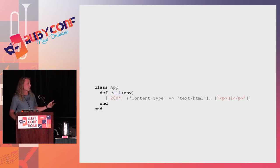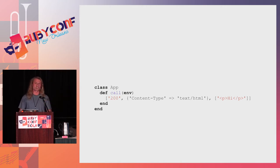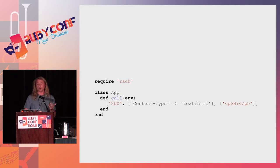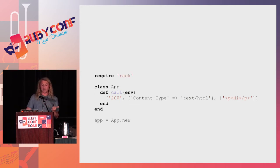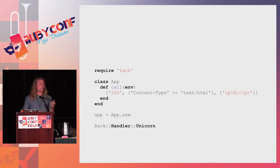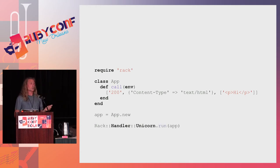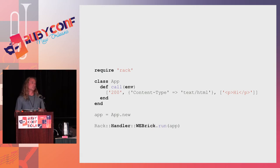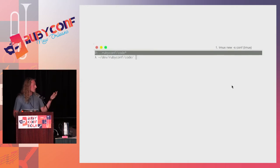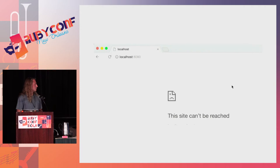So what's the most basic Rack application we can build? We have a class called App, define a call method that takes the request — which Rack calls the env — and it returns a triple. To run it, we require Rack, initialize a new instance of our app so it can respond to call, pick a web server adapter like Unicorn, and run the application. If we want to use Puma or WEBrick, we just swap in those adapters. That's a Ruby web app in three lines of code.